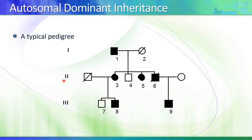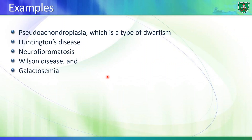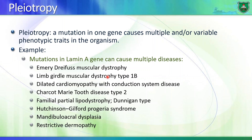The criteria for autosomal dominant disorders: the phenotype appears in every generation, males and females are equally at risk, and a child of an affected heterozygous parent has a 50% chance of inheriting the disorder. Examples of autosomal dominant disorders include pseudochondroplasia, Huntington's disease, Wilson's disease, and galactosemia.